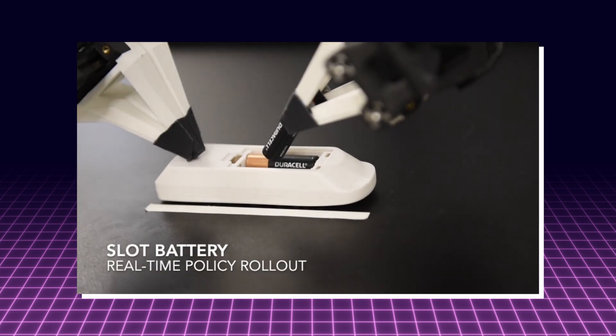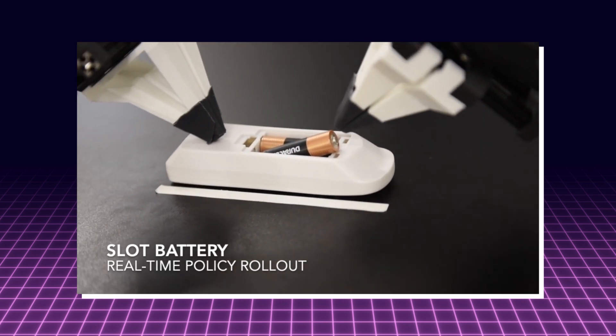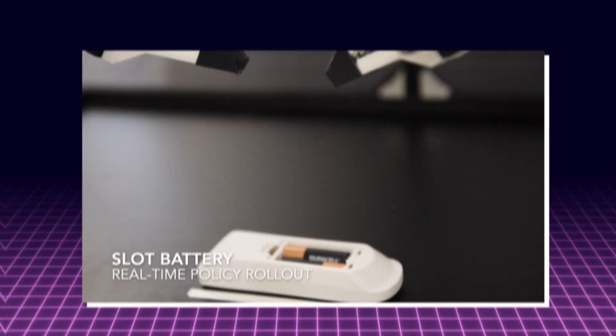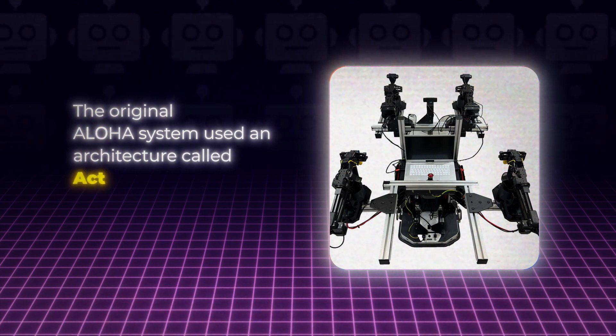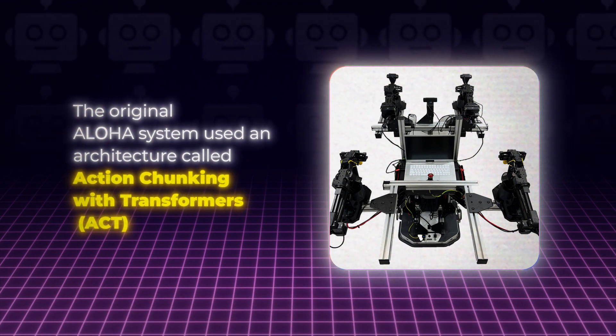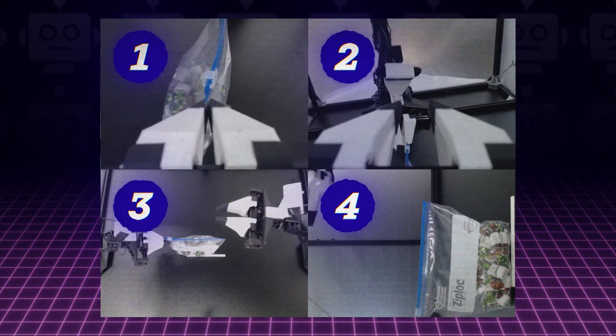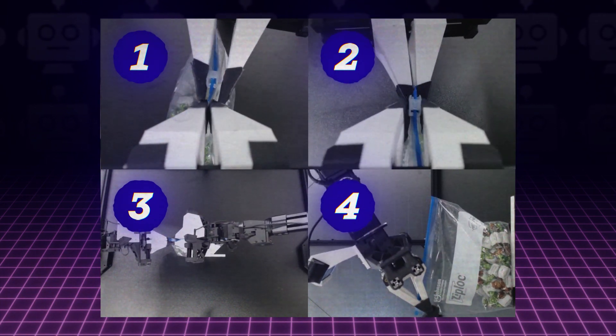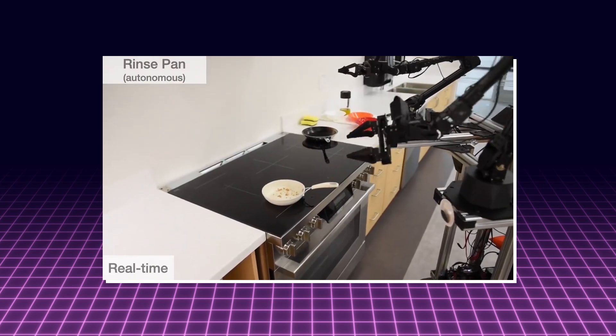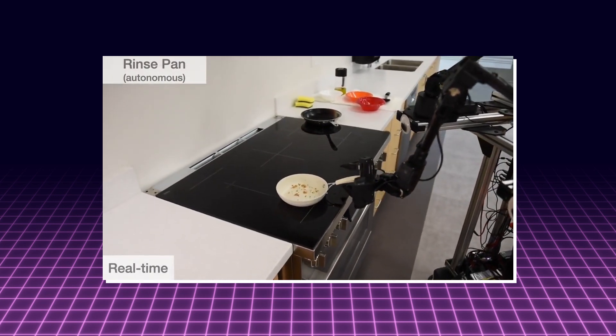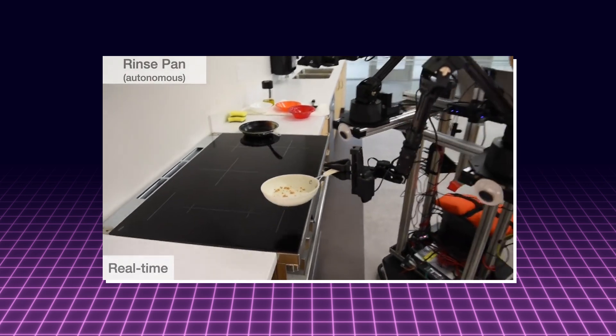Mobile Aloha also takes advantage of transformers, a type of architecture used in large language models. The original Aloha system used an architecture called Action Chunking with Transformers, which takes images from multiple viewpoints and joint positions as input and predicts a sequence of actions.